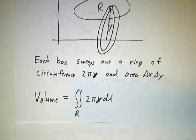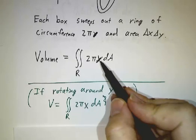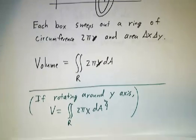Now, how do we do that? Well, that depends on whether it's Type 1 or Type 2. Oh, by the way, if you were rotating around the y-axis, you would say that the radius is x, so it would be the integral of 2πx dA instead of 2πy dA. If you were integrating around the x-axis, it's 2πy dA.